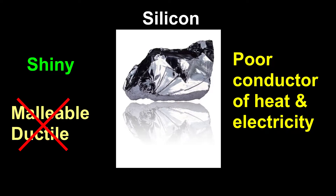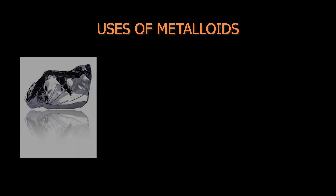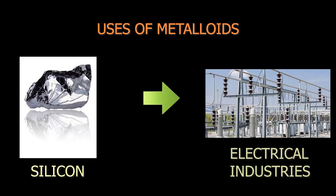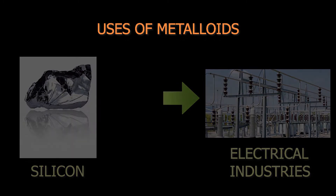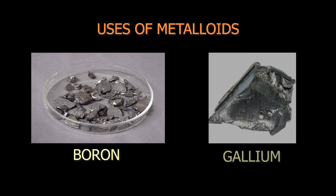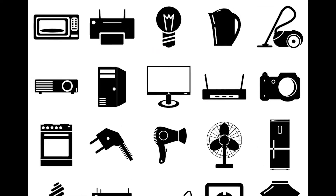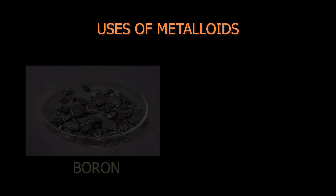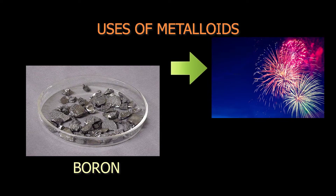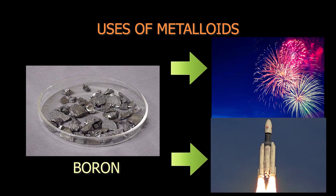Let's discuss a few uses of metalloids. Silicon is a semiconductor and is heavily used in electrical industries. Other metalloids such as boron and gallium are also used in electrical devices. Boron is used in fireworks and as a fuel for ignition in rockets.